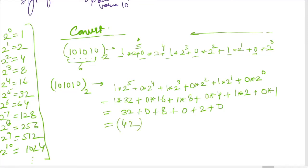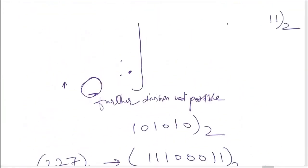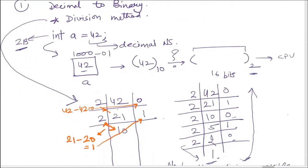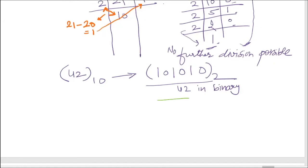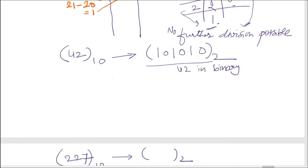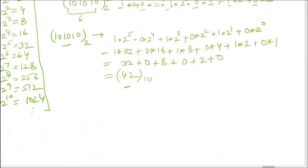This gives 32 + 0 + 8 + 0 + 2 + 0 = 42 in decimal. This confirms the reverse conversion: we originally started from decimal 42, converted it to binary 101010, and now converting back gives us 42.